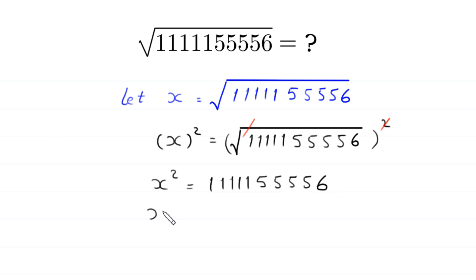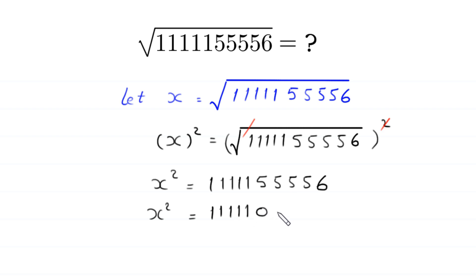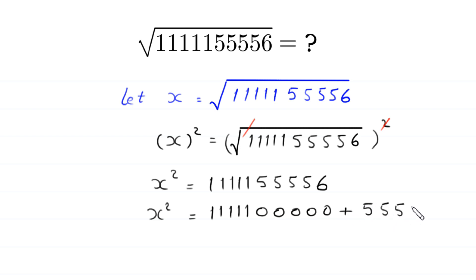x squared is equal to this number, which can be written as 111110000 plus 55556.